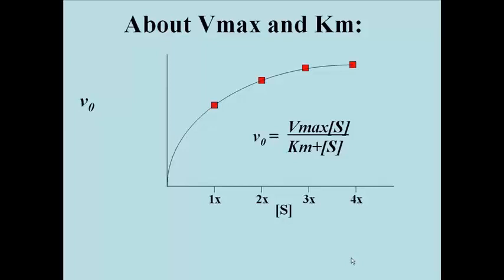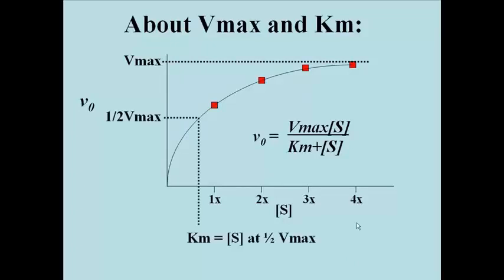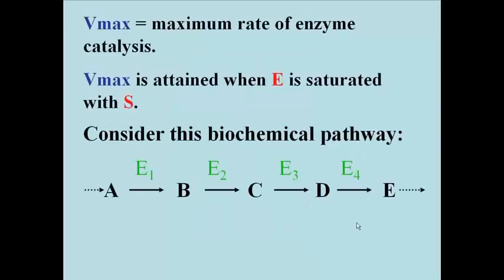So now let's talk about Vmax and Km. Here's our graph again. Here's Vmax, that asymptotic approach to a maximal rate of reaction, and here's Km at the bottom of the graph. Km turns out to be equal to the substrate concentration at which the reaction is proceeding at one-half of its maximal velocity. Vmax is the maximum rate of catalysis by an enzyme, attained when the enzyme is saturated with substrate.